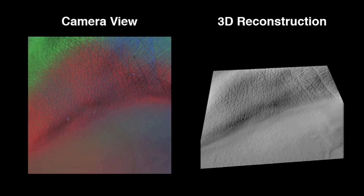GelSight is flexible enough to measure a person's pulse. Here we show the camera view and 3D reconstruction of a user's wrist.